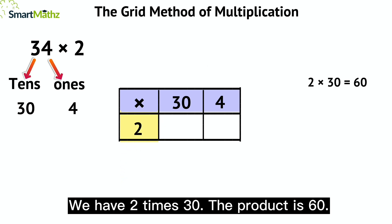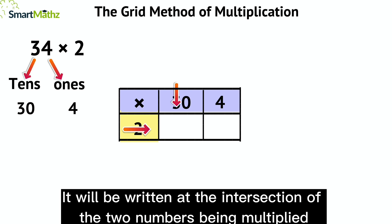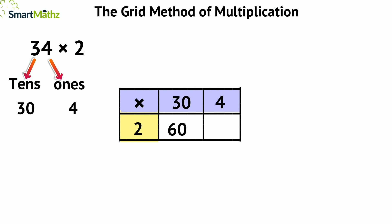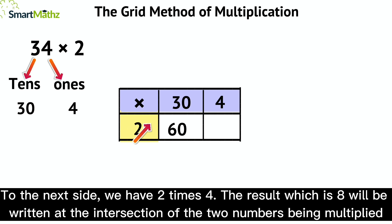It will be written at the intersection of the two numbers being multiplied. To the next side, we have 2 times 4. The result, which is 8, will be written at the intersection of the two numbers being multiplied.